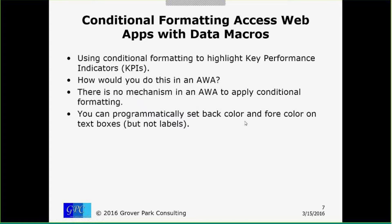In an Access Web App we do not have the conditional formatting mechanism — there's no way to do that via a dialog. However, you can programmatically set back color and fore color on text boxes. I have not yet found a way to programmatically change those properties on labels at runtime. You can set them at design time, but not at runtime. You definitely can set back color and fore color on text boxes programmatically at runtime, and that's what I ended up doing.